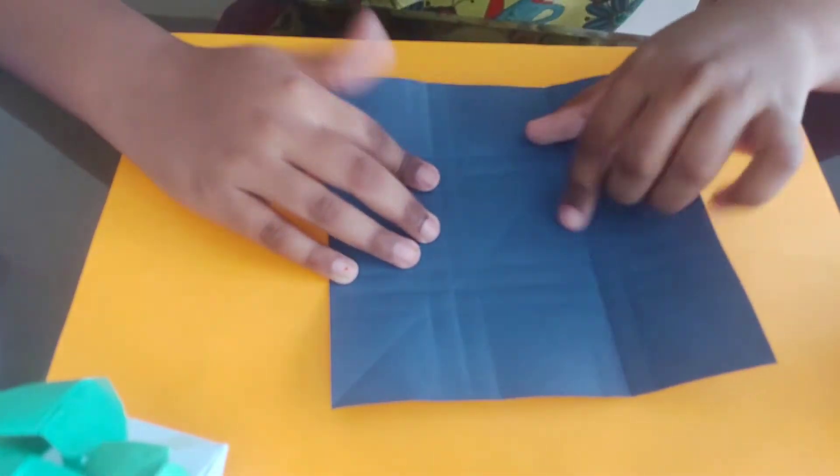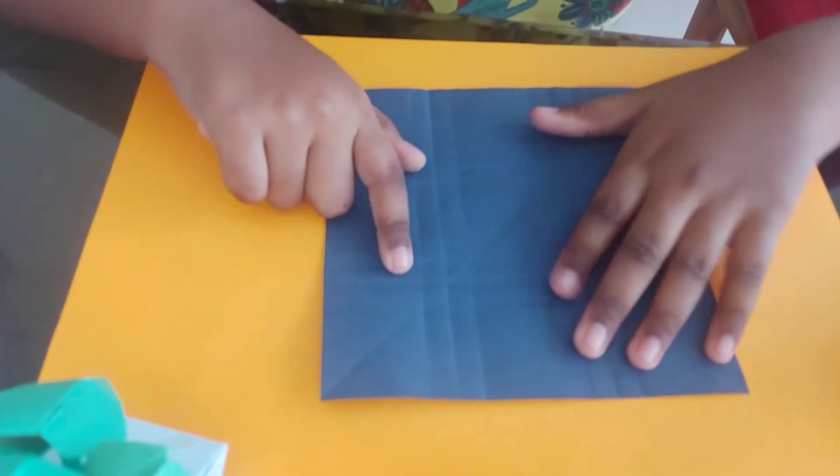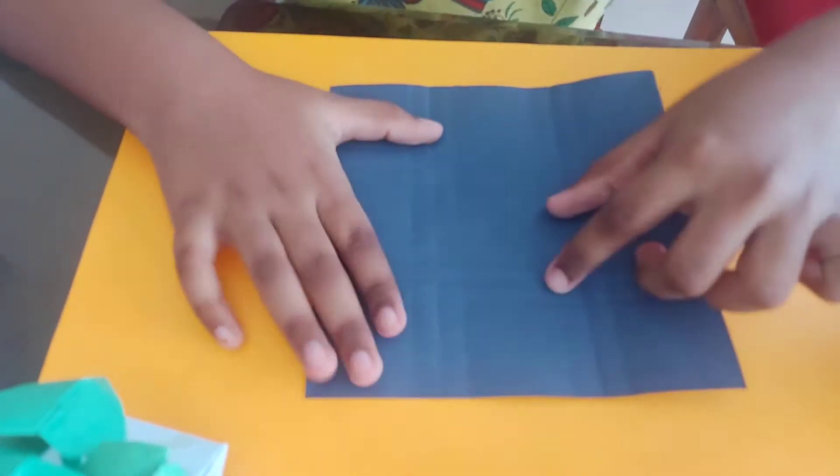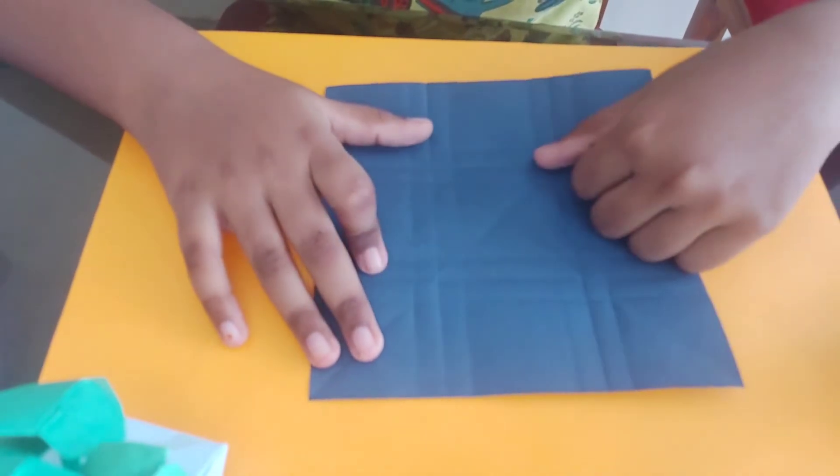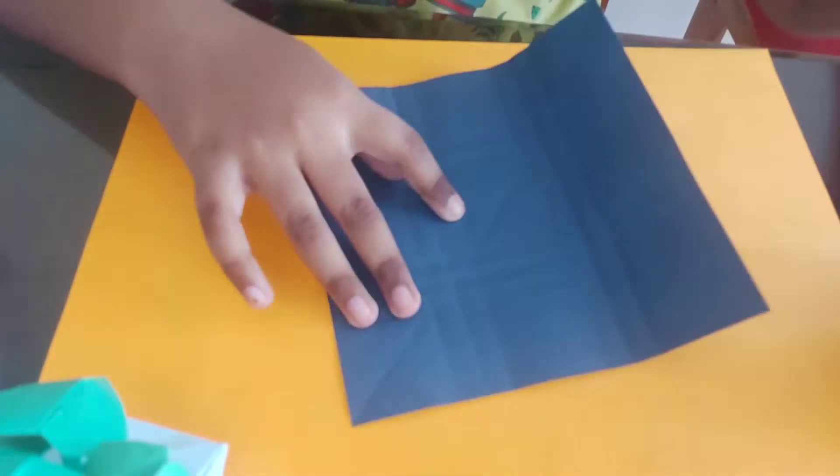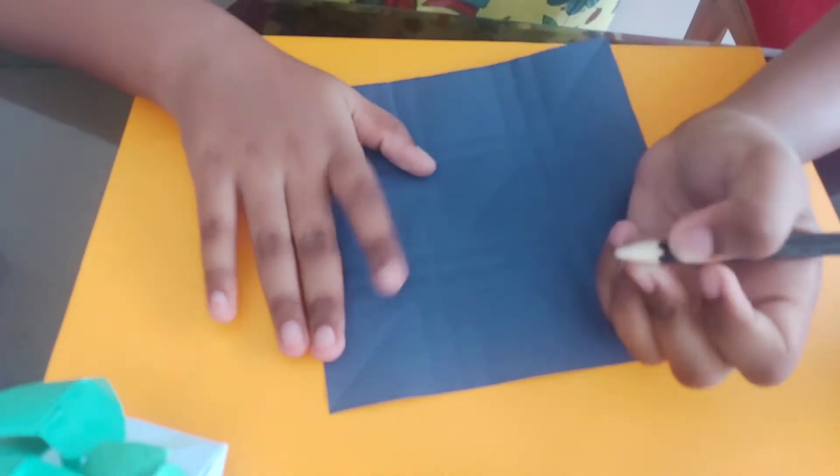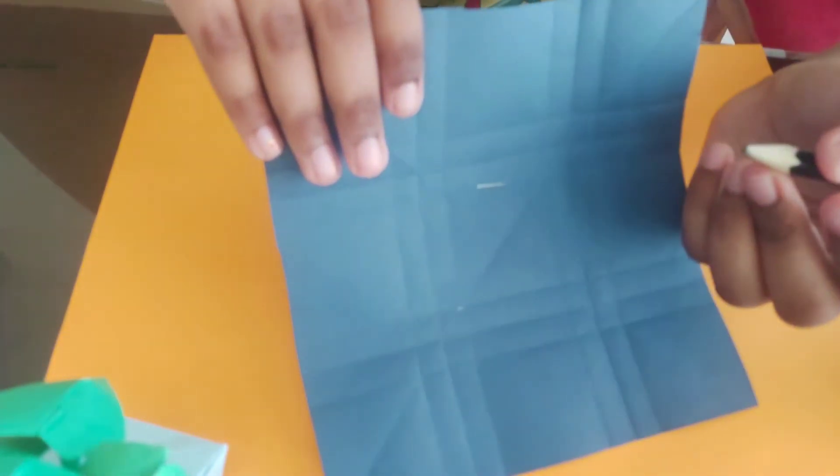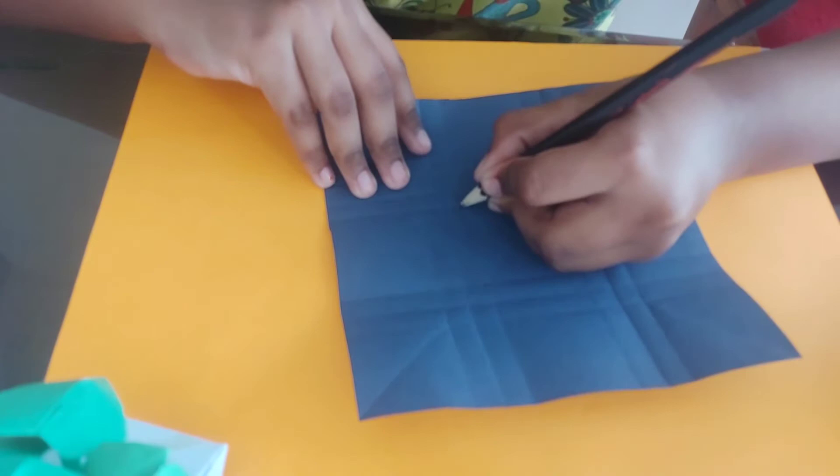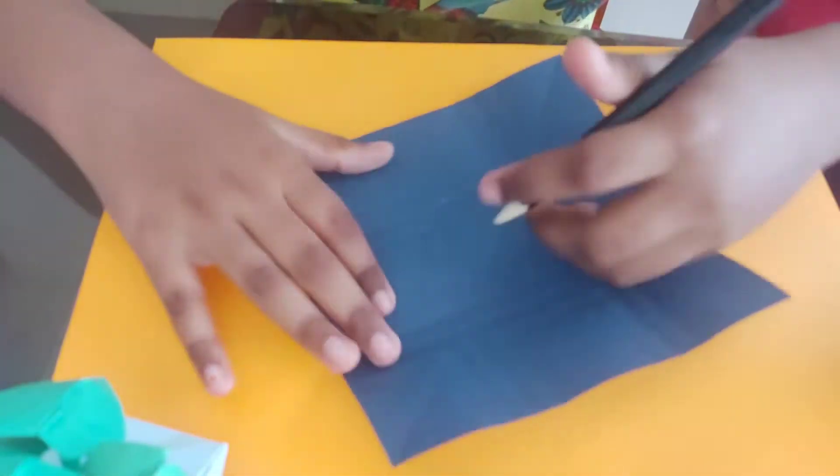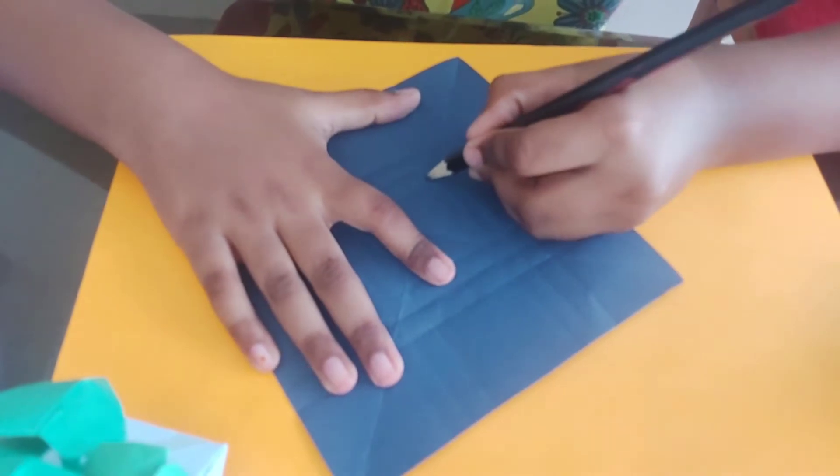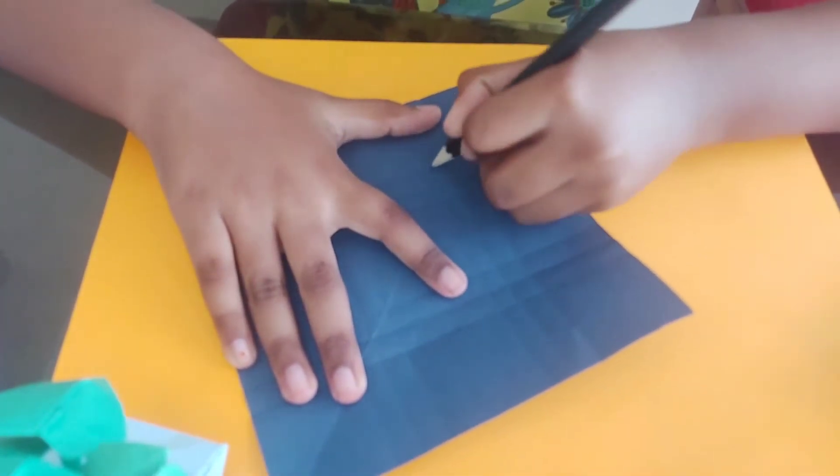Now you will get something like this. You would have three lines here, three lines here and that would make a square. Now what you do is here you would find a corner. This corner, you need to draw a line from there to this point.